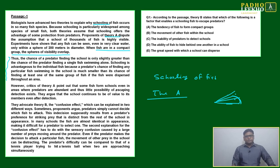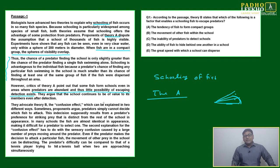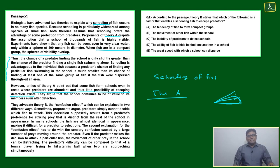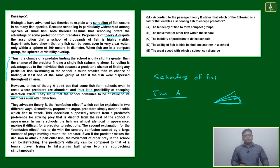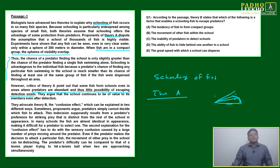However, critics of Theory A point out that some fish form schools even in areas where predators are abundant and thus little possibility of escaping detection exists. Our assumption in the second paragraph was that predators are very few in number. But in many areas of the sea or other water bodies, predators may be in very large numbers — then overlapping and other mechanisms may still not keep fish very safe.